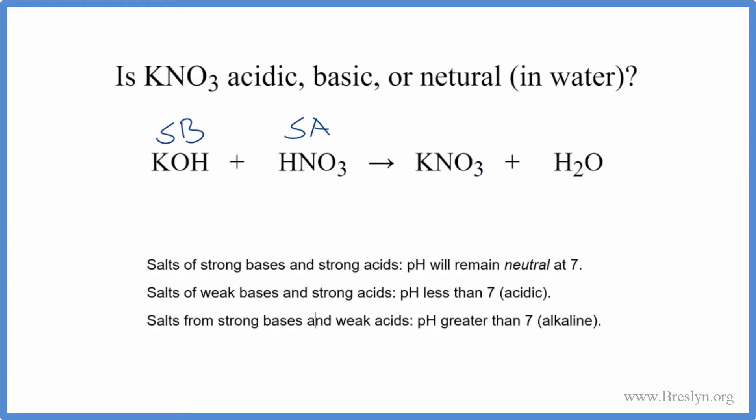So we can use these rules here to figure out what the pH will be when we put the KNO3 in water. We have a strong base and a strong acid, so the pH is going to be neutral. The pH is going to be 7.